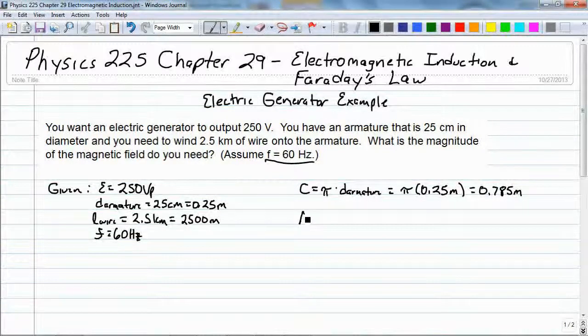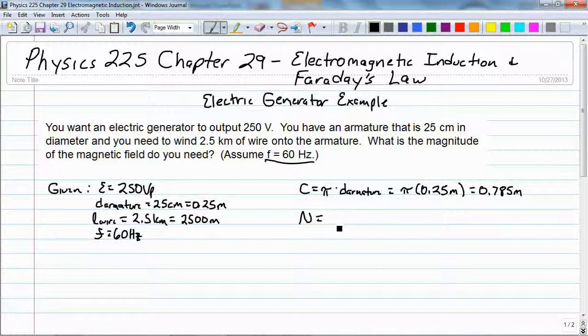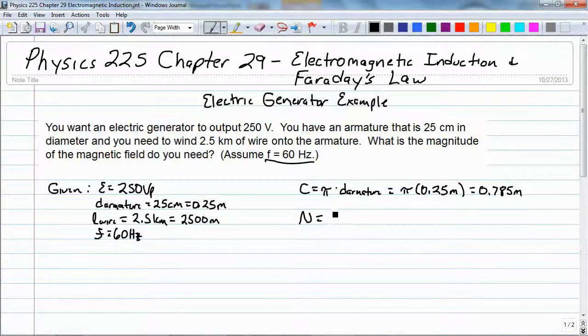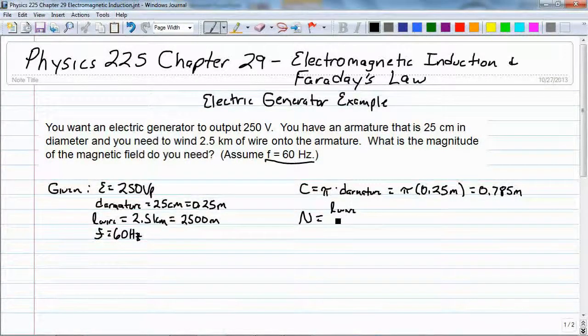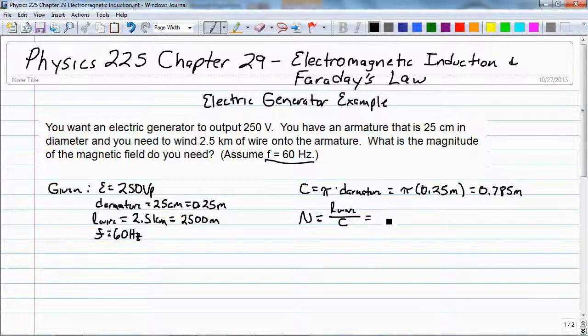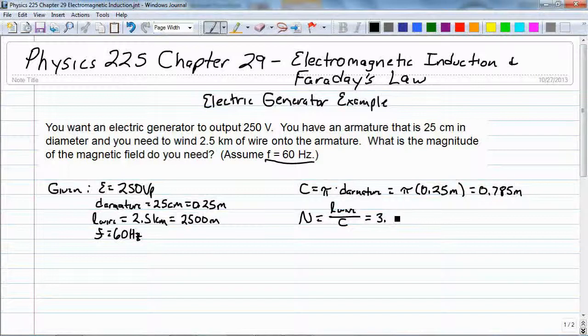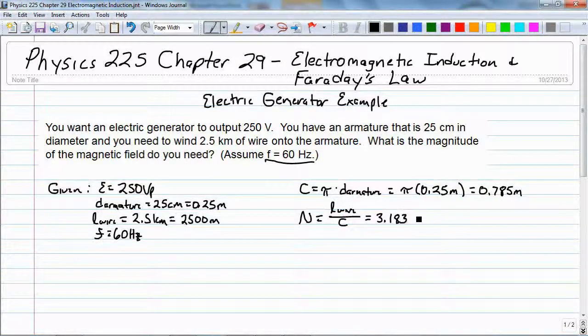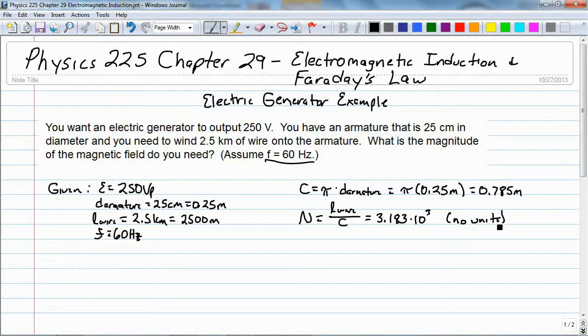So the number of loops that I can fit around that is equal to the length of the wire, we're doing a little bit of approximation here, divided by the circumference, and that gives me 3.183 times 10 to the third loops. There's no units here, because the length of the wire and the circumference both have meters as their units, and those cancel out.